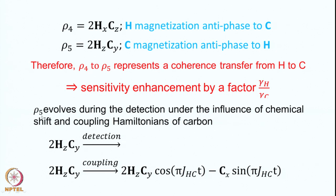After ρ5, the density operator evolves during the detection period under the influence of the chemical shift and coupling Hamiltonians of carbon. The term 2HzCy evolves under coupling first. This gives: 2HzCy cos(πJ_HC · t) − Cx sin(πJ_HC · t). The same expression is written during the FID: 2HzCy cos(πJ_HC · t) − Cx sin(πJ_HC · t).